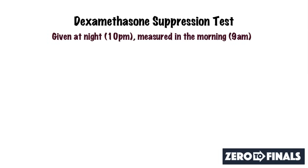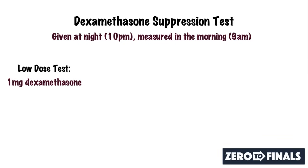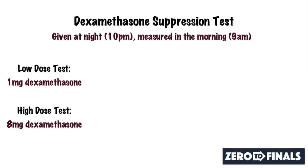How is the test done? You give dexamethasone at 10 p.m. at night, and the next morning you measure their cortisol and their ACTH. It's really done in two stages. The first stage is the low dose test where one milligram of dexamethasone is used, to confirm whether the patient has a normal adrenal axis or Cushing's syndrome. The second step is the high dose test where 8 milligrams of dexamethasone is used, to look at the cause of the excessive cortisol.